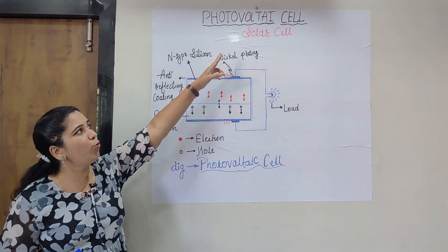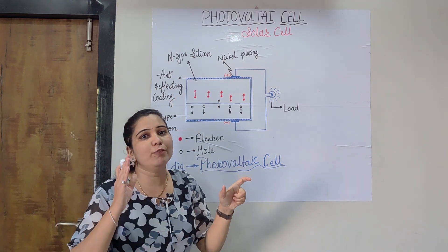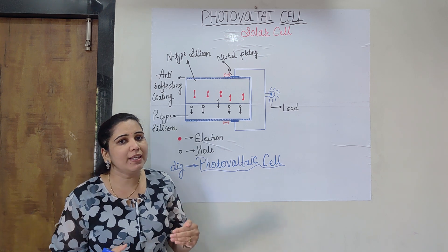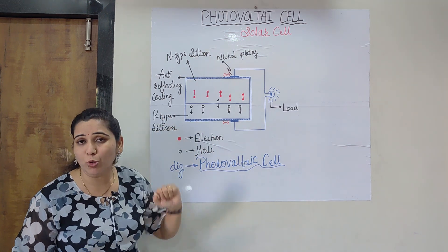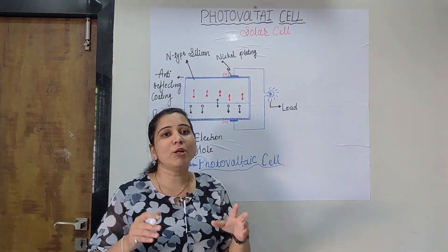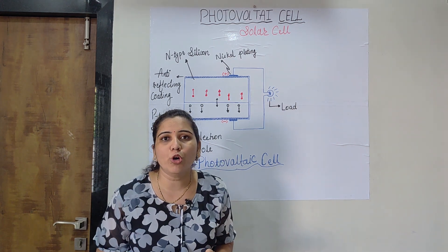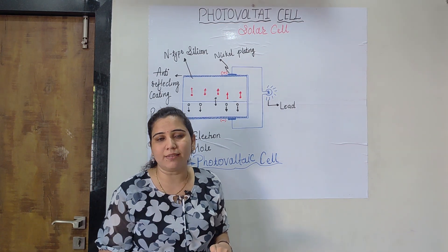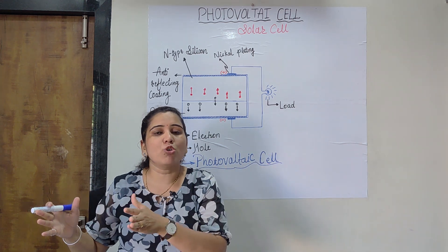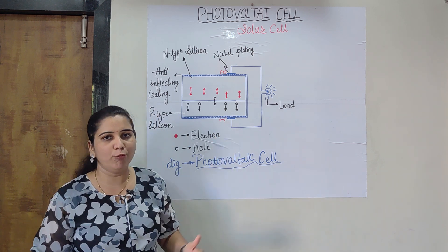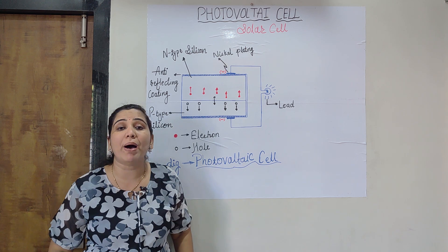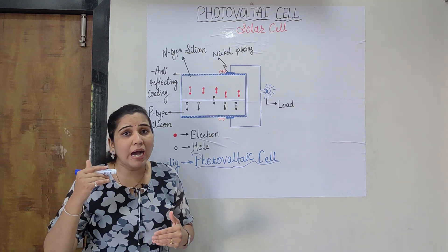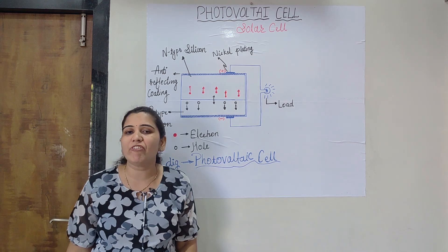Today we will study the photovoltaic cell. 'Photo' refers to light, and when light is used to form electrical energy by a particular device, that device is called a photovoltaic cell — also called a solar cell. The panels present on the roofs of homes, buildings, complexes, hospitals, and farms are nothing but arrangements or modules of solar cells connected in series and parallel to form large panels that generate a lot of electrical energy from the sun.